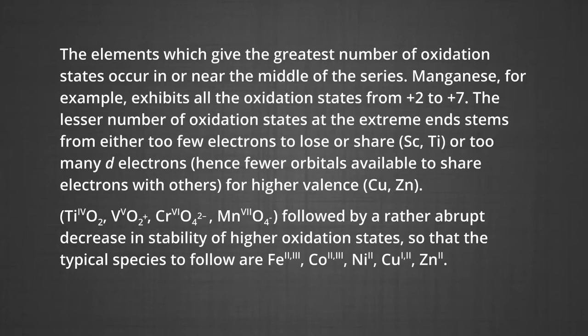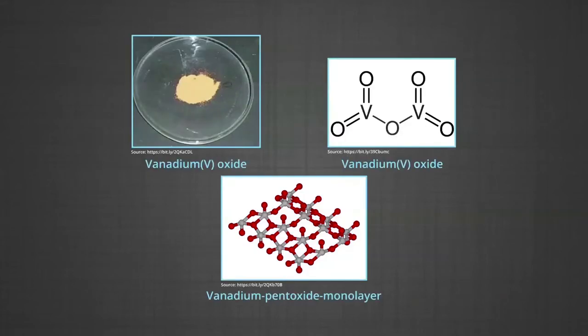The typical species that follow are iron in +2 and +3 states, cobalt in +2 and +3, nickel in +2, copper in +1 and +2, and zinc in +2. The figure shows crystals of vanadium oxide, where vanadium is in the +5 oxidation state.